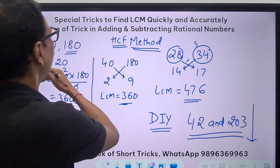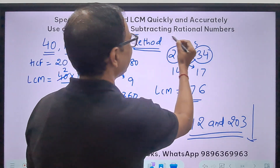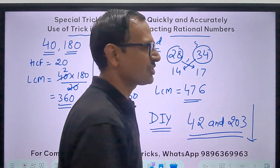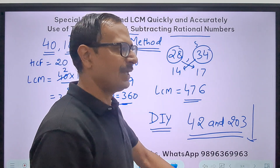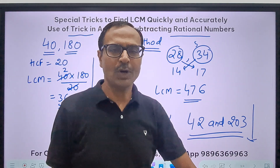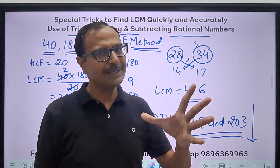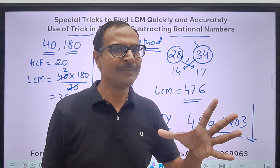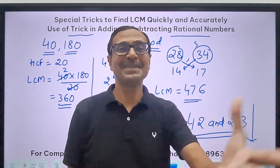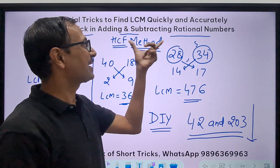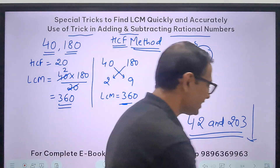Now let's come to the use of this trick in adding and subtracting rational numbers. You know how to find the LCM using observation, co-prime numbers, and multiples. Once you are good at that, you don't even require to explicitly find the LCM to add and subtract rational numbers. Let's see how.